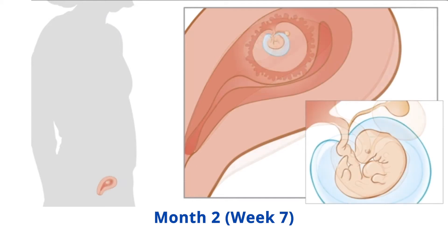Week 7: brain development is rapid this week. The face, nose, ears, and eyes begin to develop. The arm and leg buds continue to form, and the ends of the upper arms become paddle shaped. The embryo may start to twitch.